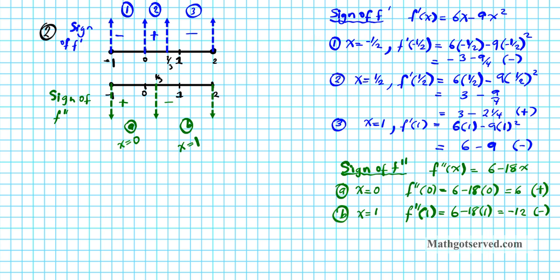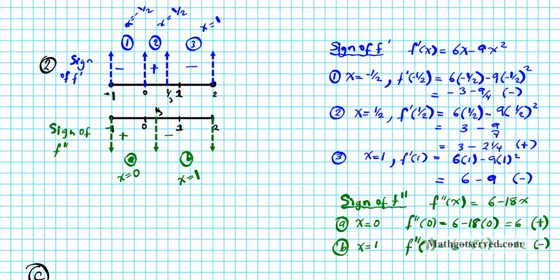For part C, we use the sign chart to apply the first derivative test. From -1 to 0, the derivative is negative so the function is decreasing. From 0 to 2/3, the derivative is positive so the function is increasing. From 2/3 to 2, the derivative is negative so the function is decreasing.